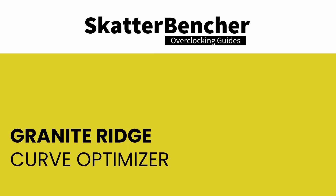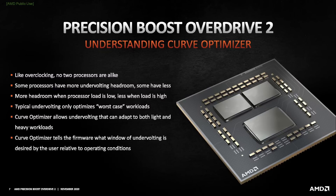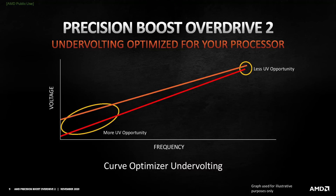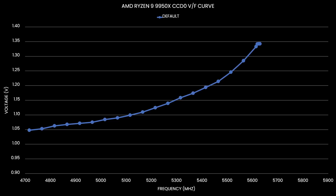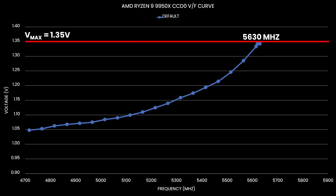Curve Optimizer has been one of the most important overclocking tools of the Precision Boost Overdrive toolkit. It is most commonly known for its undervolting capabilities, but on an AMD Ryzen CPU it kind of also works as an overclocking tool. Take the Ryzen 9 9950X CCD0 for example. When all cores are active, the maximum allowed voltage is 1.35V. The Precision Boost 2 algorithm utilizes the VF curve to find the maximum allowed frequency at 1.35V. With the default curve, that's about 5630 MHz. However, the programmed maximum frequency for the Ryzen 9 9950X is actually 5750 MHz.